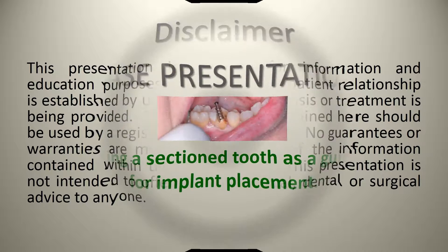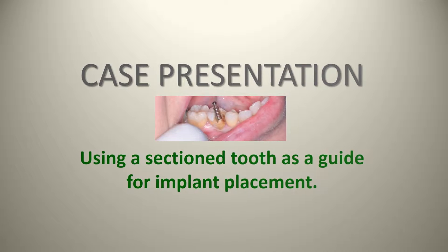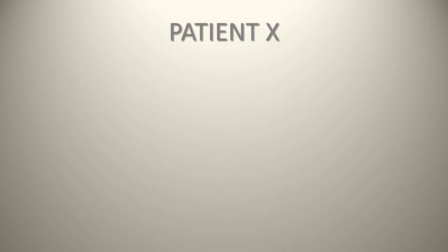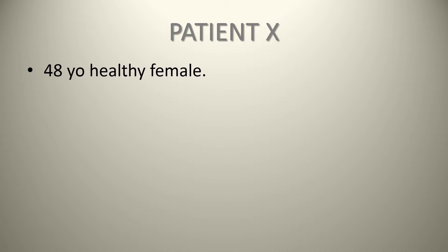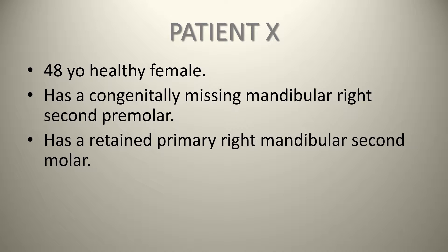Today we have a case presentation about using a sectioned tooth as a guide for implant placement. We have patient X, a 48-year-old healthy female who has a congenitally missing mandibular right second premolar and a retained primary right mandibular second molar.